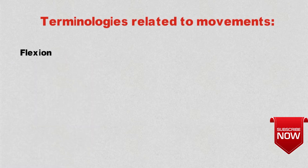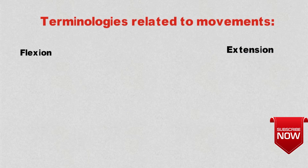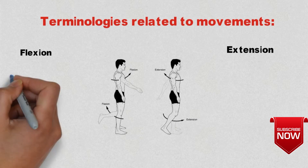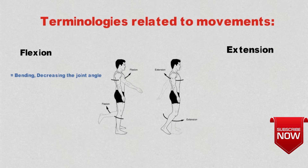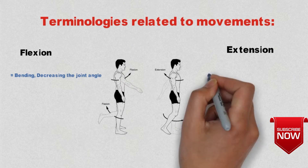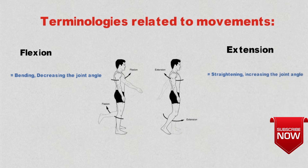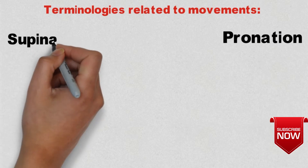The next terminologies are flexion and extension. In the diagram we can see the upper and lower parts of the body being flexed and extended. Flexion refers to bending and decreasing the joint angle, whereas extension refers to straightening or increasing the joint angle.